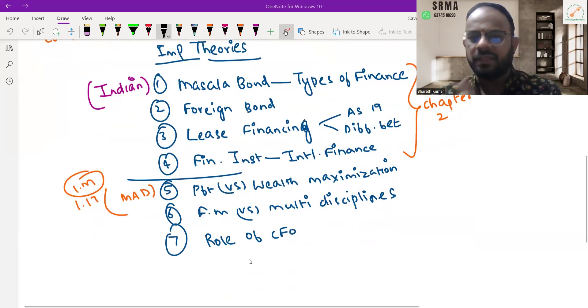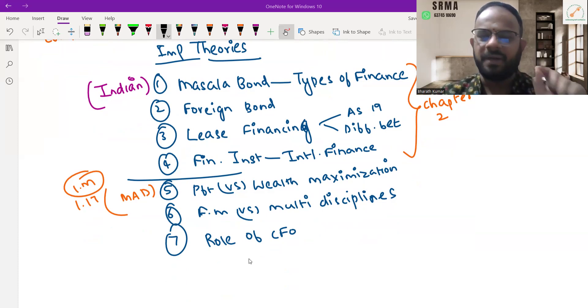Profit maximization, wealth maximization—differentiate between these using the table. Cover the table of advantages and disadvantages in the latest study material, Party 1.17.